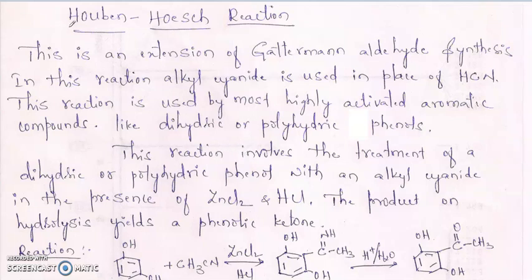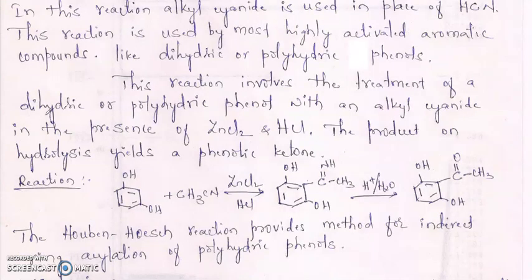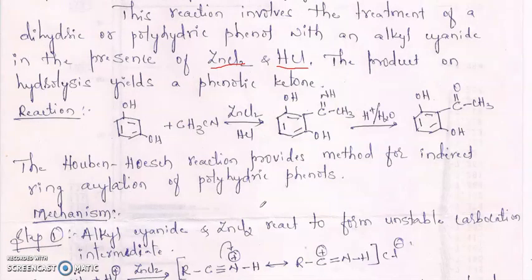Hello students, today we are going to discuss the Hoesch reaction. This is an extension of Gattermann's aldehyde synthesis, as we discussed in the last video. In this reaction, alkyl cyanide is used in place of HCN. This reaction is used for highly activated aromatic compounds like dihydric or polyhydric phenols. The product on hydrolysis yields a phenolic ketone.